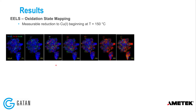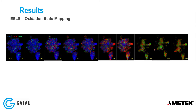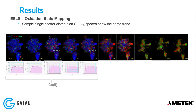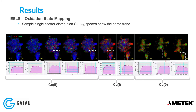A measurable reduction to copper(I) begins at around 150 Celsius, showing a trend from blue to red in the maps. As temperature reaches 400 degrees Celsius, the map changes to green, indicating formation of copper(0). Looking at sample copper L2,3 energy loss spectra as single-scattered distributions after Fourier deconvolution, the same trend is confirmed — the fingerprints are very characteristic of copper(II) at low temperature, copper(I) at intermediate temperatures, and copper(0) at higher temperatures.